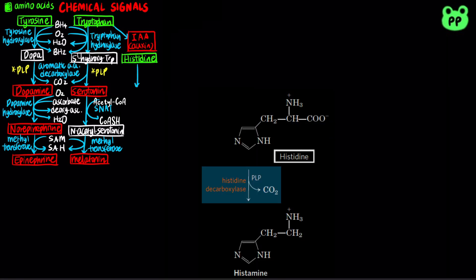Histidine can be decarboxylated by histidine decarboxylase to form histamine, which also requires the cofactor pyridoxal phosphate. Histamine plays an important role in vasodilation during inflammatory reaction, as well as serving as a neurotransmitter that promotes wakefulness and homeostatic functions.